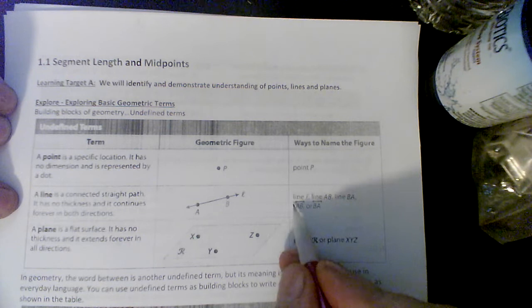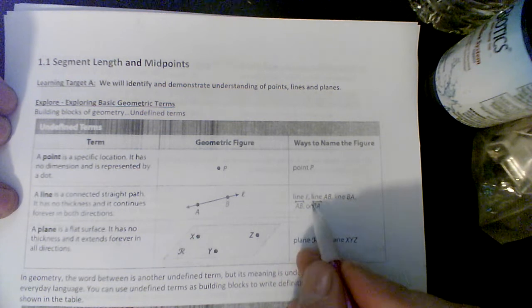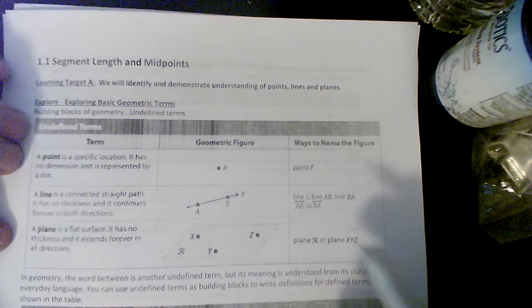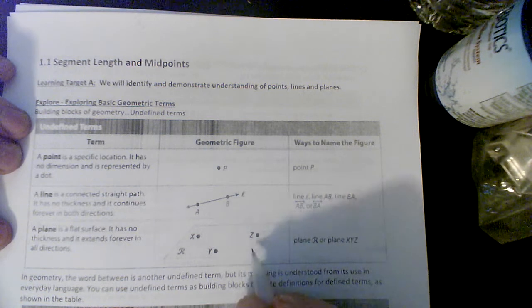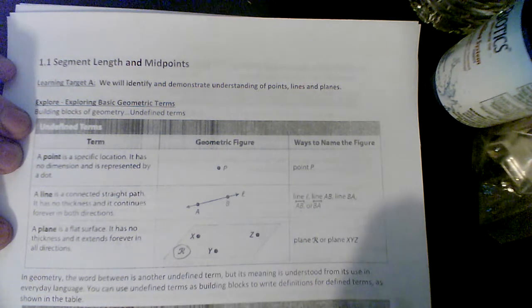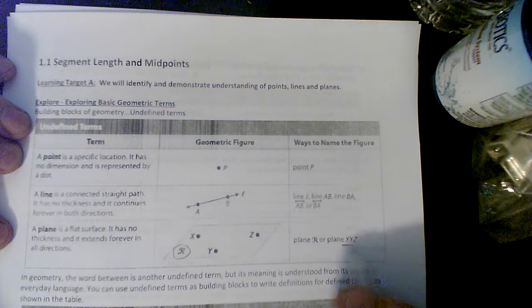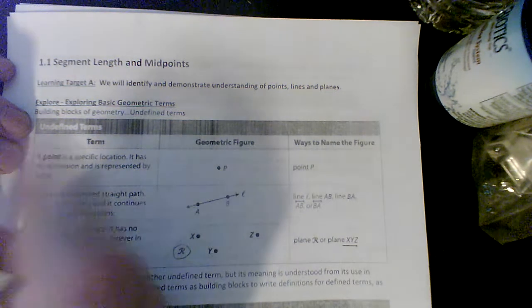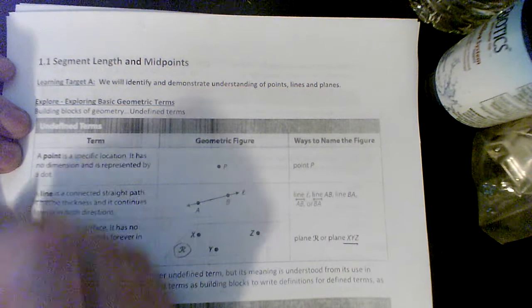Notice I can say line AB or line BA, and there's arrows up here. A plane has to have three points to make a plane. Notice that we have this cool script—this is plane R. As long as you name three points, you've named that plane.